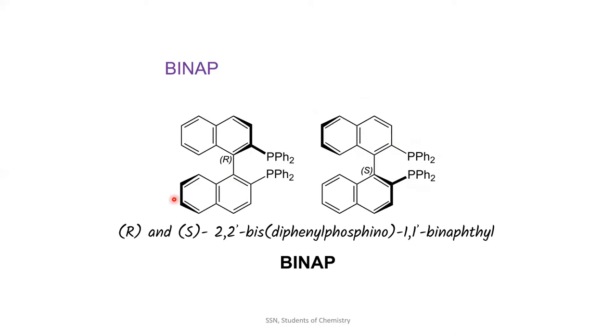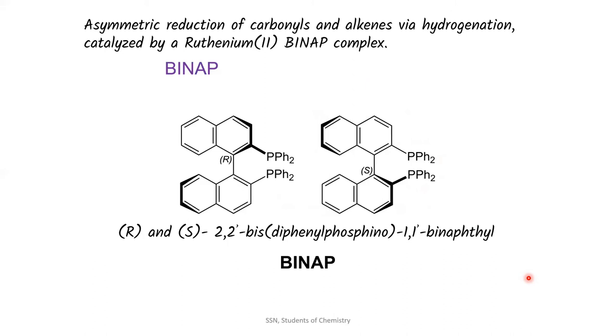This is the R form of BINAP, whereas this is the S form of BINAP. Hence, Noyori asymmetric hydrogenation is defined as the asymmetric reduction of carbonyls and alkenes via hydrogenation, catalyzed by a ruthenium-2-BINAP complex.